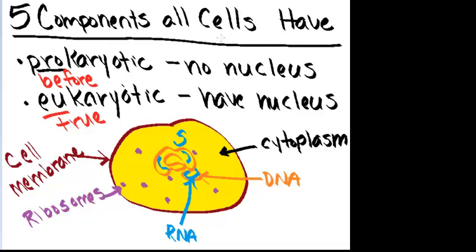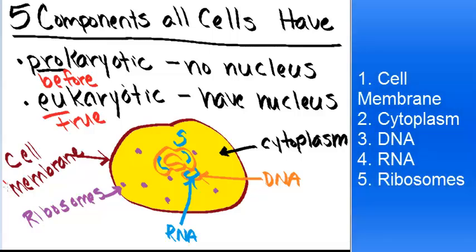So very quickly, here are your five components that every cell must have. The cell membrane, the cytoplasm, the DNA, the RNA, and the ribosomes. All of these are your necessary components that every cell, whether it's eukaryotic or prokaryotic, must have.